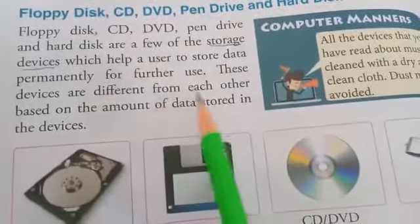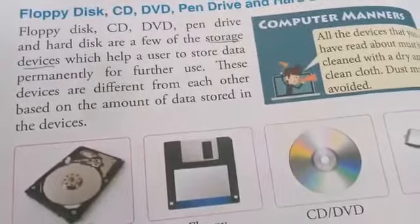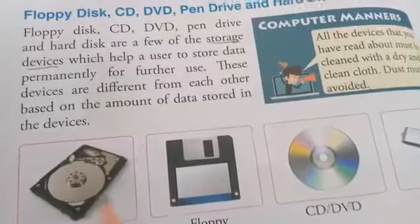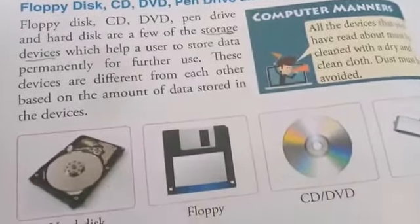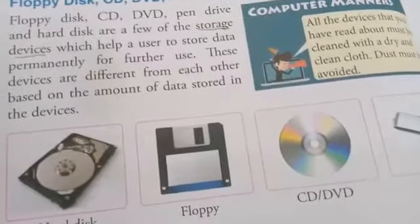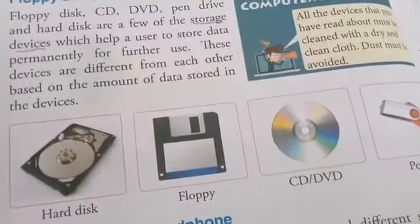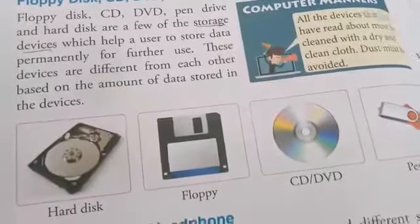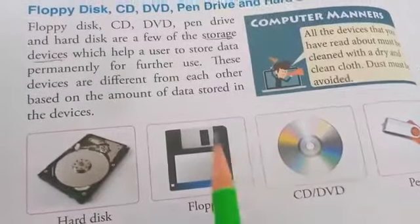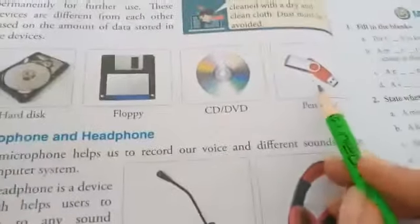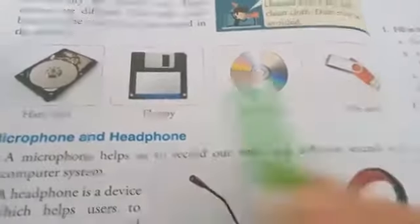These devices are different from each other based on the amount of data stored. Some have less storage and some have more storage — like a small cupboard, medium cupboard, and big cupboard. They also have different sizes, so we can store as much data according to storage capacity. The most storage capacity is in pen drive and hard disk.